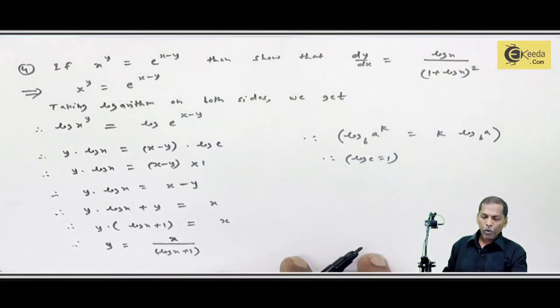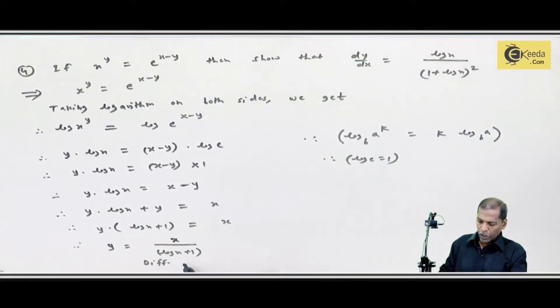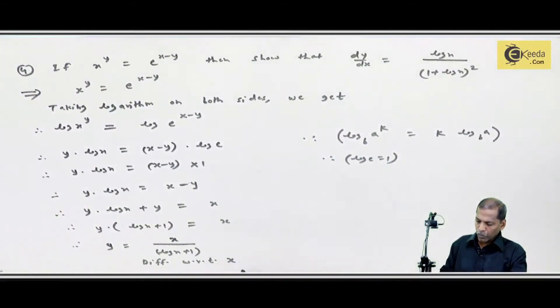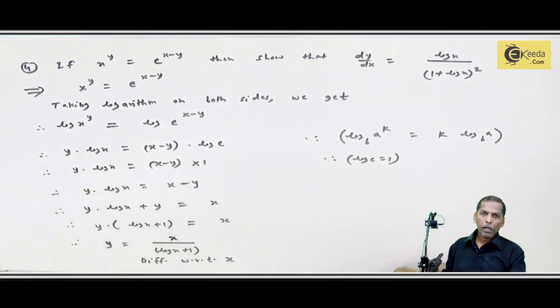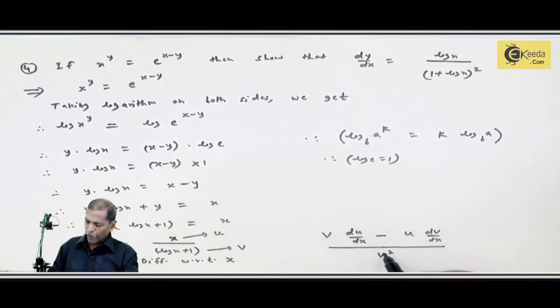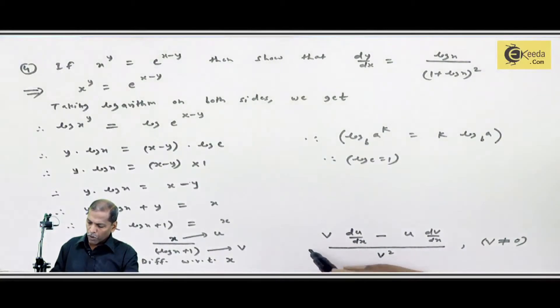This is the simplified form. Now we can differentiate with respect to x. This differentiation we will do by using u upon v rule. Here x is present in numerator, denote as u. Log of x plus 1 is present in denominator, denote as v. The formula: we keep v as it is, then derivative of u, that is du by dx, then minus u same, then derivative of v, that is dv by dx, and totally divide by v square, provided denominator v not equal to 0.